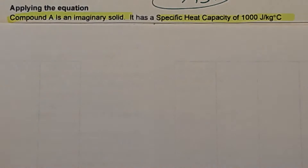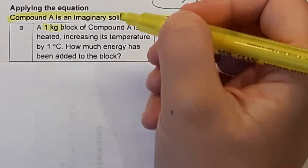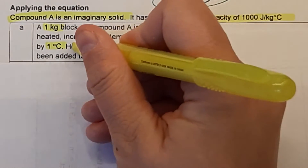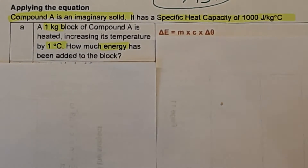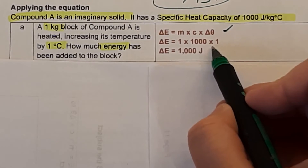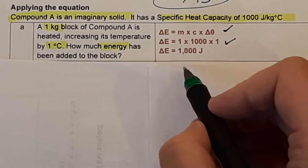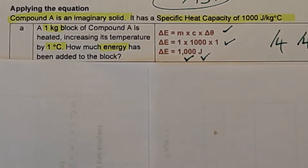Question A: a 1 kg block of compound A is heated, increasing its temperature by 1°C. How much energy? The equation is ΔE = m × c × Δθ. Filling in: 1 × 1,000 × 1 = 1,000 J. Marks: one for writing the equation, one for filling in numbers, one for the answer 1,000, one for the units joules. Mark out of four.